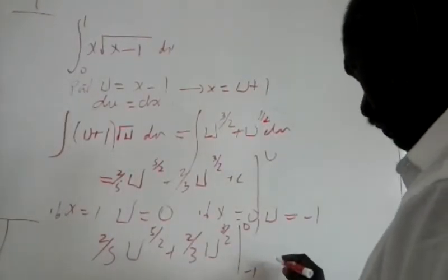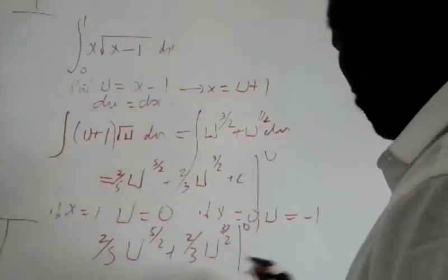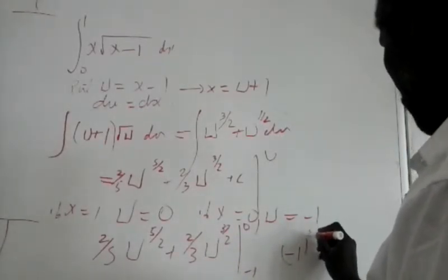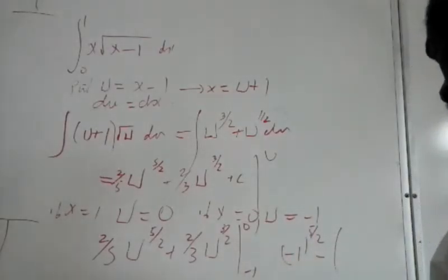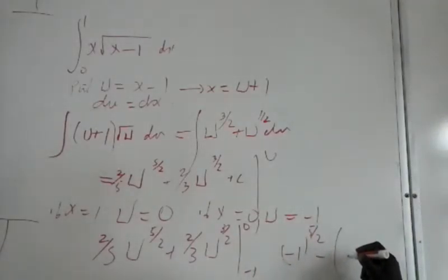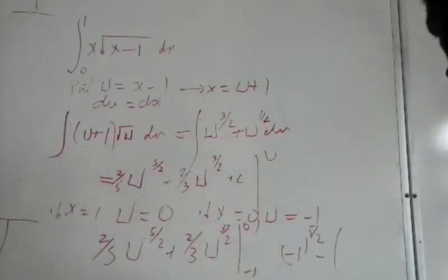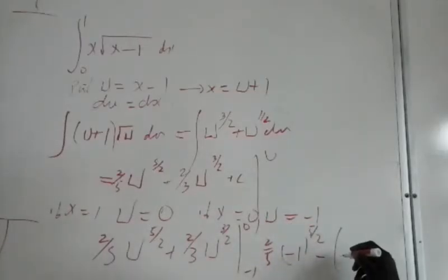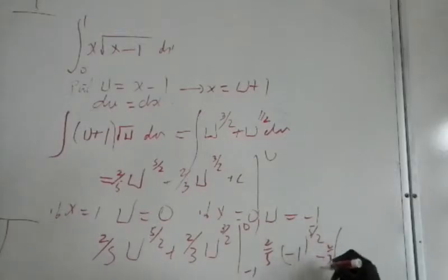Now if u equals 0, then this term is equal to 0 and this term is equal to 0. So it leaves us with now u equals minus 1. We have minus 1 to the 5 over 2 minus minus 1 to the 3 over 2.